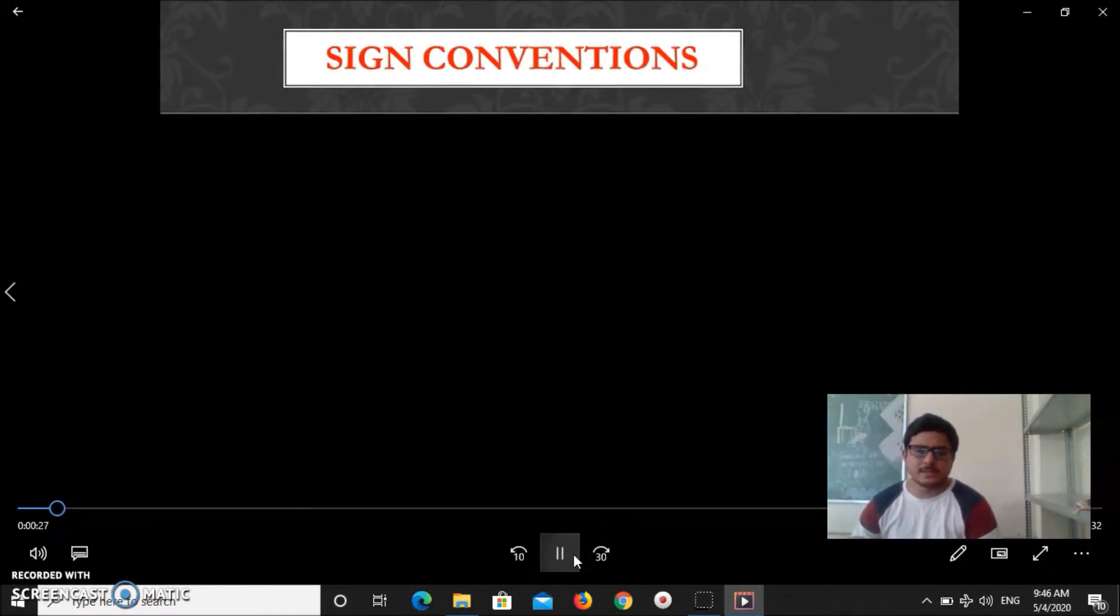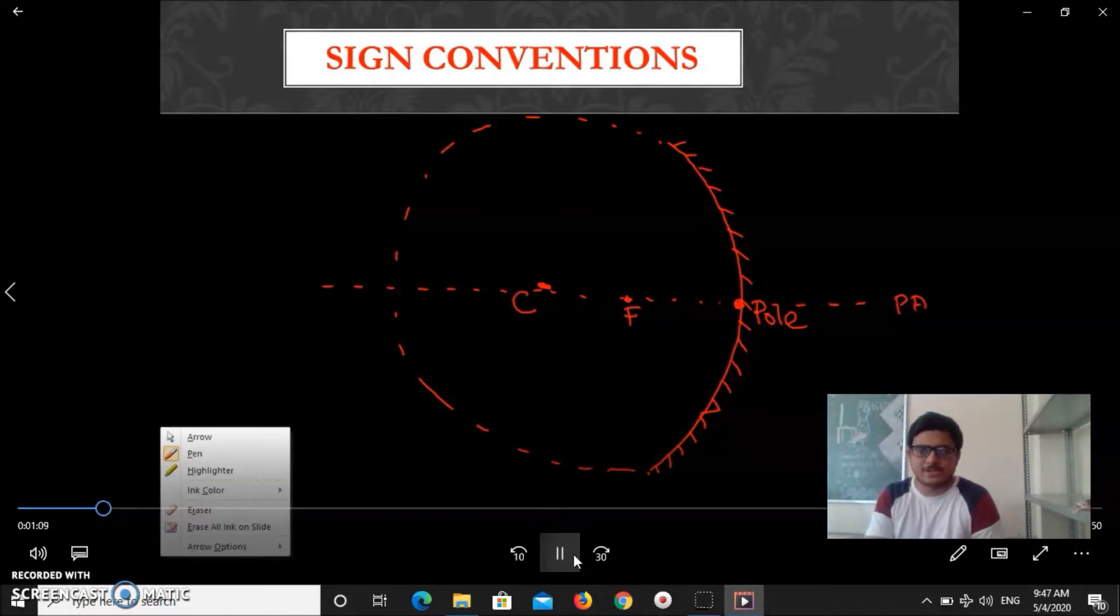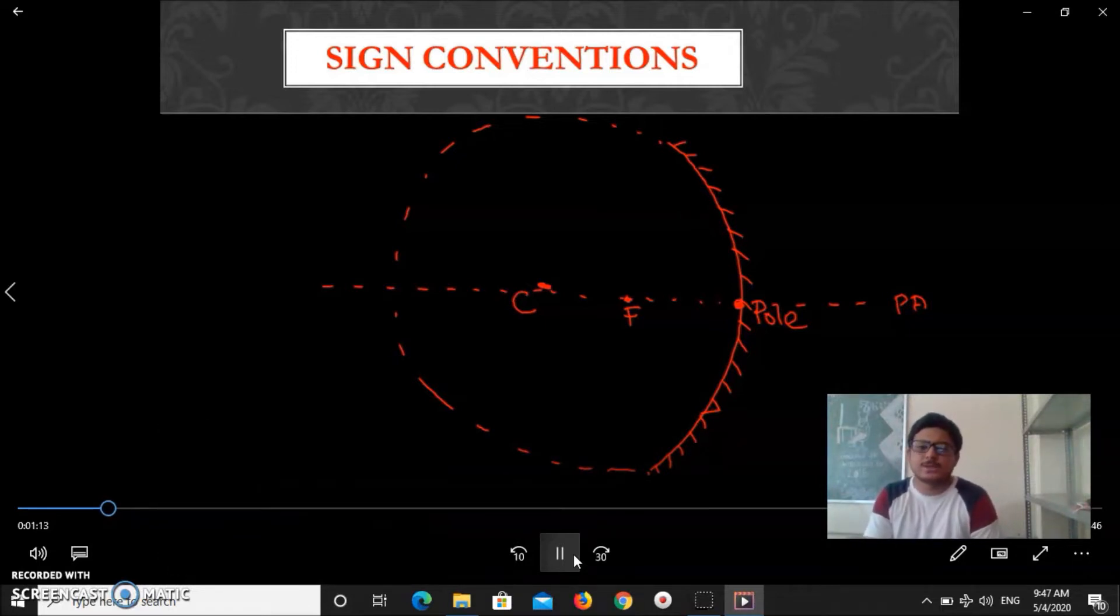First topic in our today's class is sign convention. We have four rules. In some books it may be split into five or six, so four basic rules are there for better understanding of mirror. So let's construct a concave mirror. I have continued here. Pole, center of the circle is known as the center of curvature for the particular mirror. If we join center and the pole by imaginary line, it will be known as the principal axis. Middle of pole and C is known as the focus. Thus we complete a symbolical diagram of concave mirror.